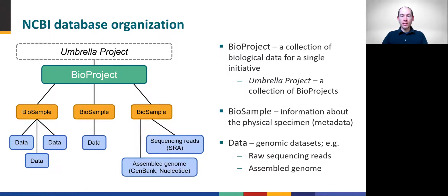Discrete data types are stored in separate databases. Within the scope of this module, the most relevant databases are GenBank and Nucleotide, which store consensus genome assemblies similar to GISAID. NCBI also stores raw sequencing read data in what's called the Sequencing Read Archive, abbreviated SRA. It's standard practice in many laboratories conducting microbial pathogen sequencing to submit both the consensus genome assembly and raw sequencing data for every specimen. Notice how this organization differs from GISAID, which stores the metadata and assembled genome sequences together as one entry in the EpiCoV database. That simplicity benefits from GISAID's specialization, whereas NCBI accommodates a wider range of data types and biological sources, flexibility that demands more complex organization.